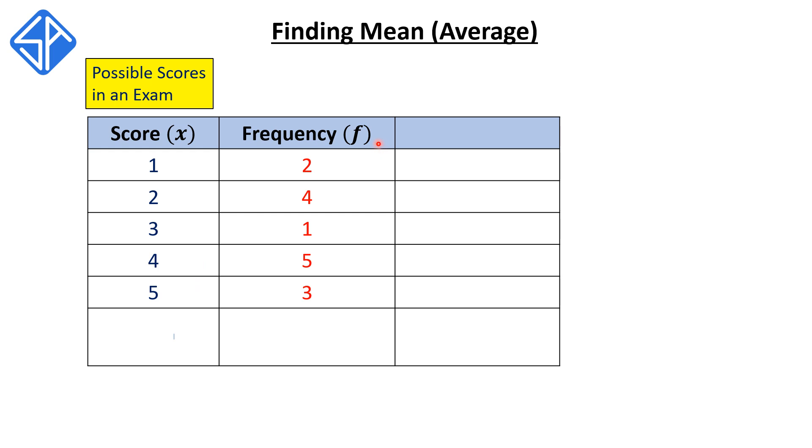Our next column, called the frequency column, denoted with the variable f, we want to think of this as the number of students with the given score.